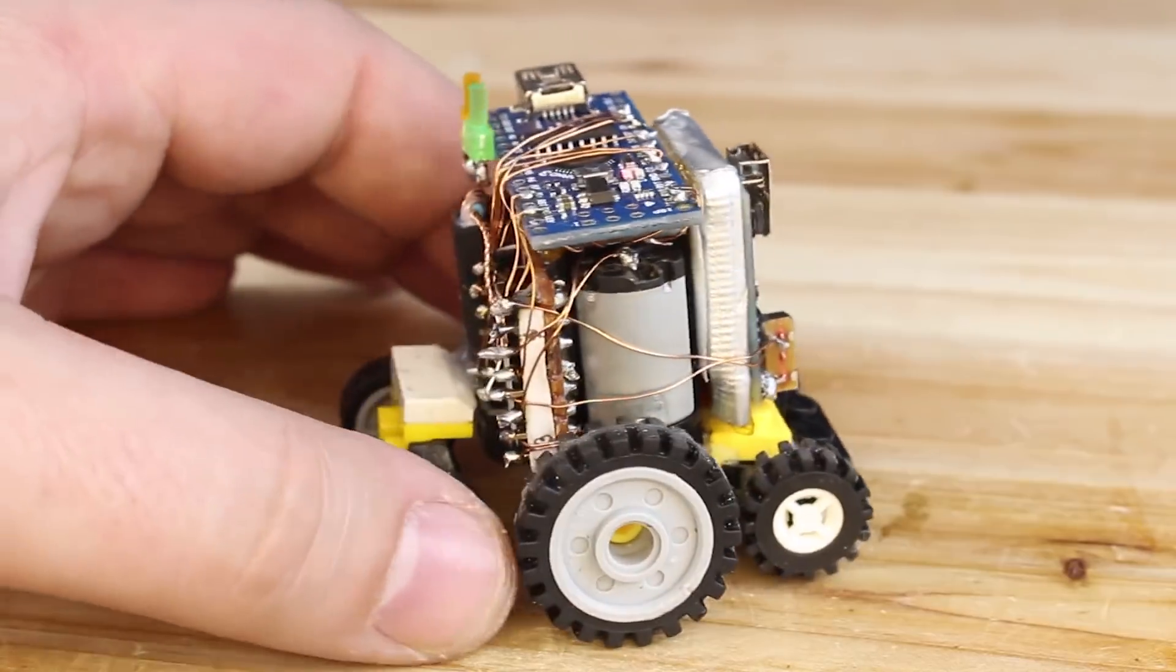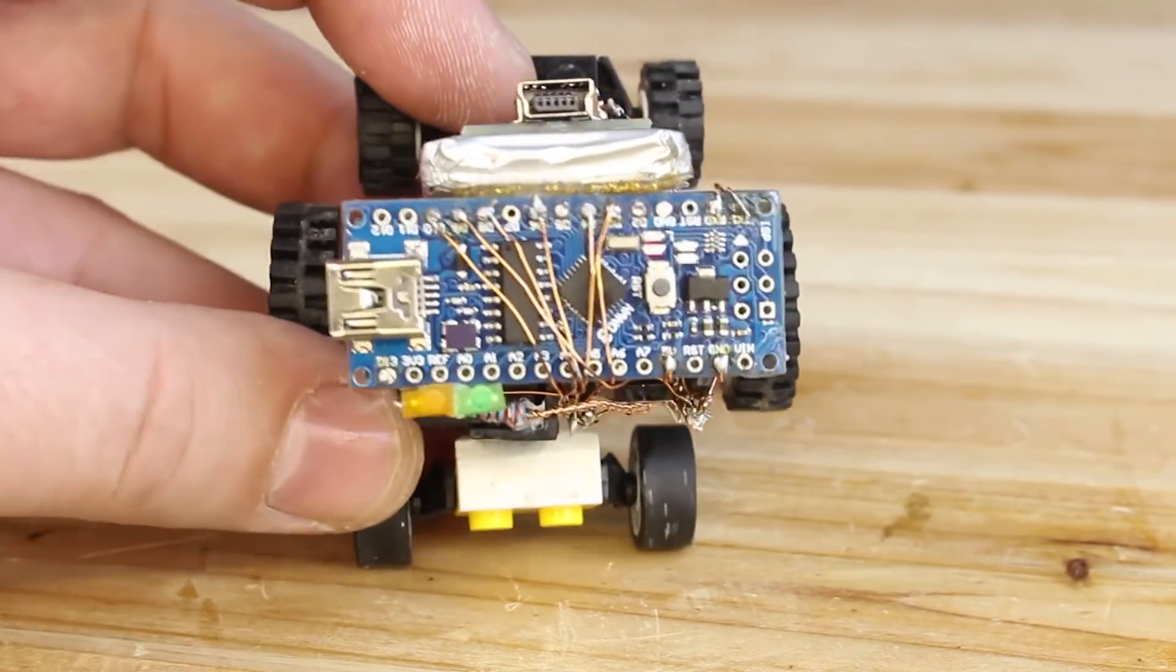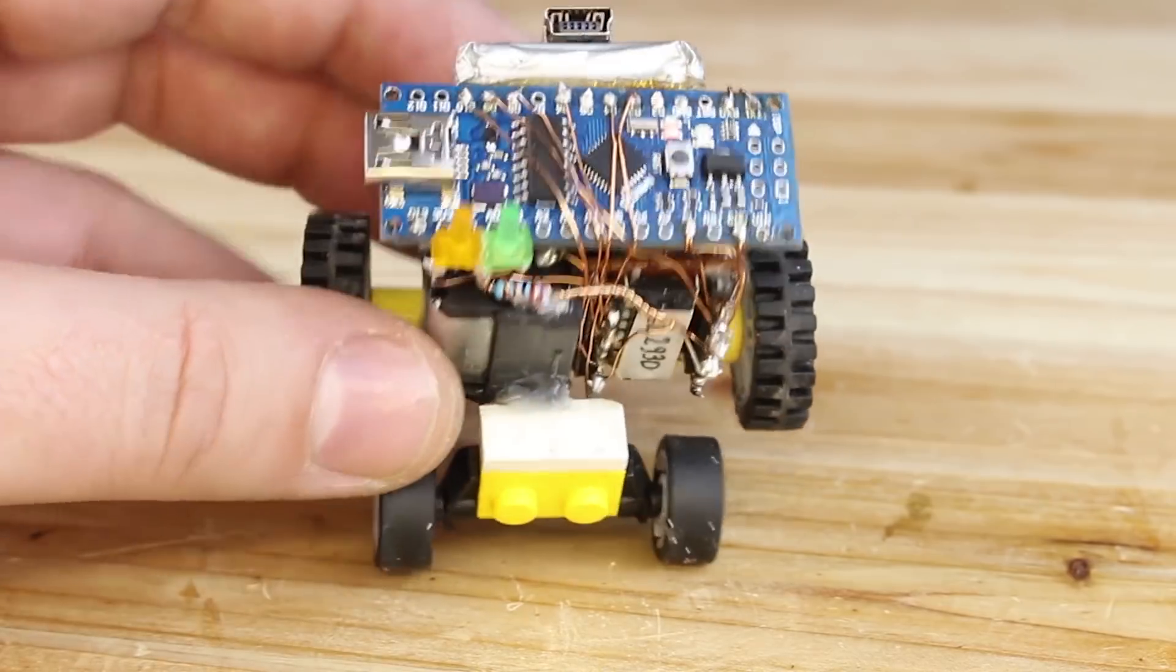Arduino Nano, and below is the Bluetooth module. All modules are wired up with this isolated copper wire, which was super annoying to solder all of them.